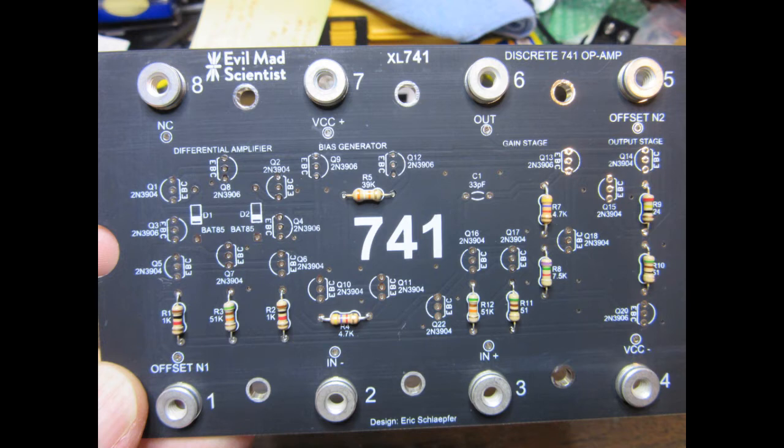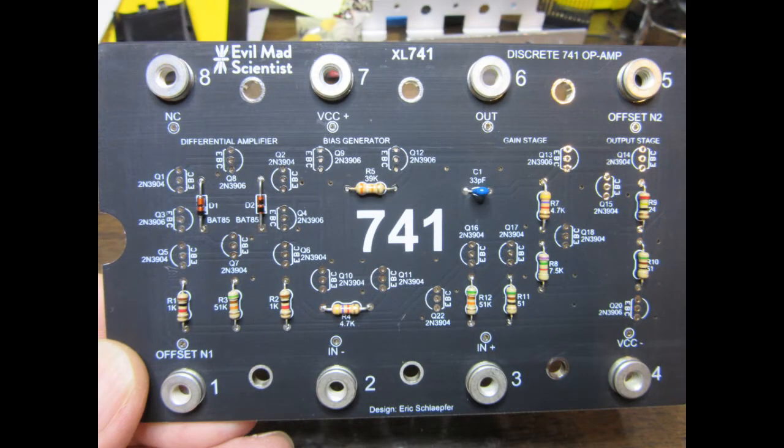Circuit assembly starts by soldering the 11 resistors, and the circuit board is clearly marked with each resistor value. Next, two diodes and the capacitor are soldered to the circuit board.